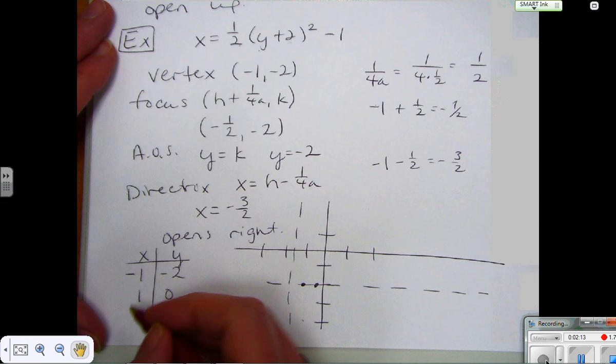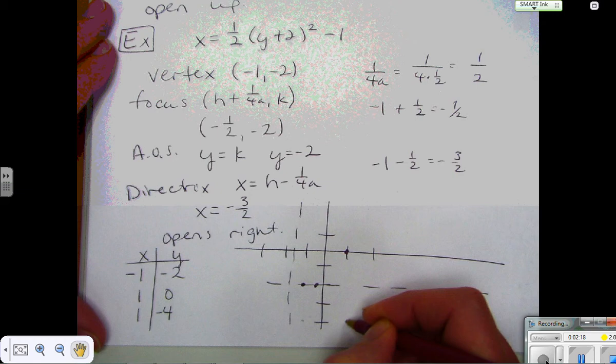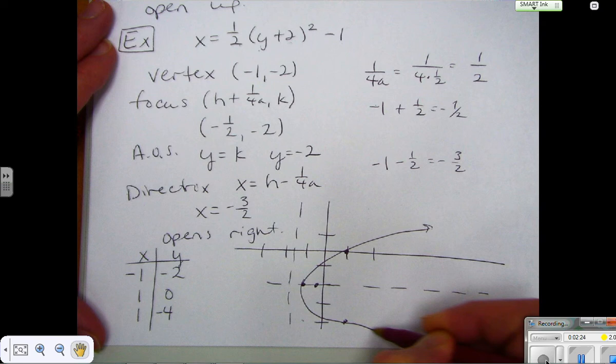1, 0 and 1, negative 4. And then I can draw my curve. And that's it. So you really just need the three points, okay?